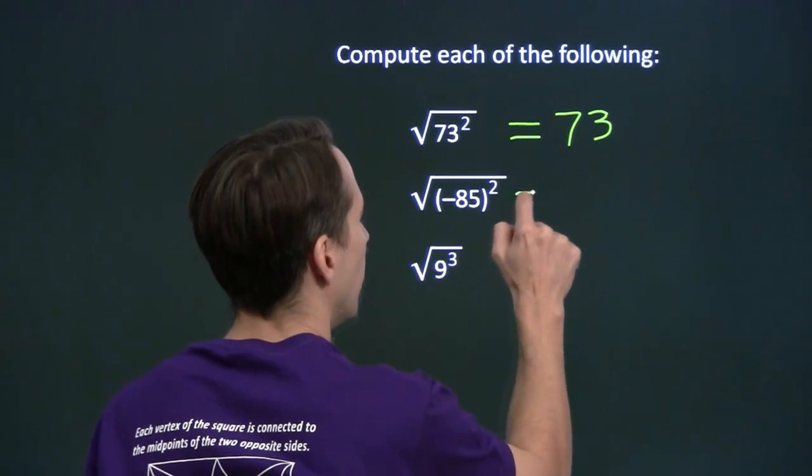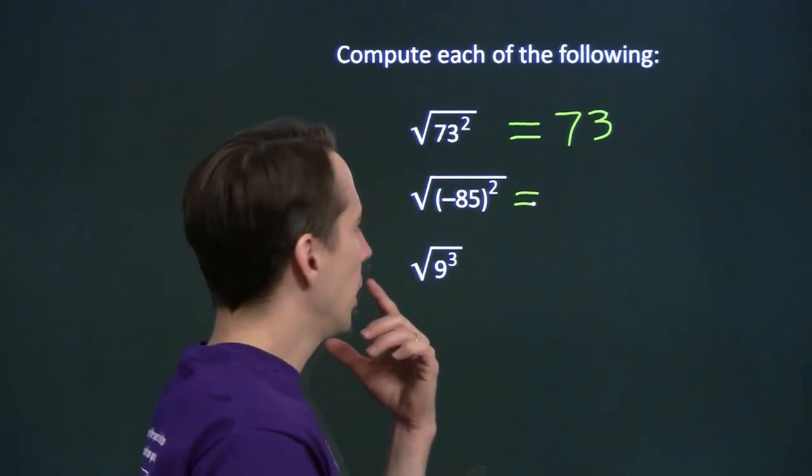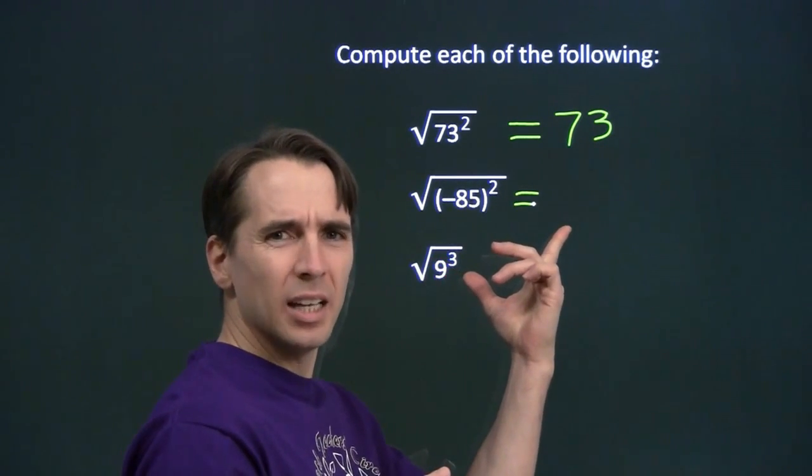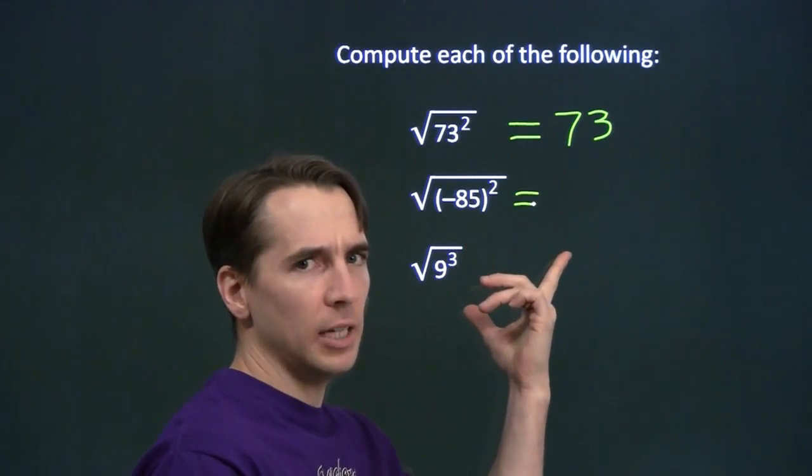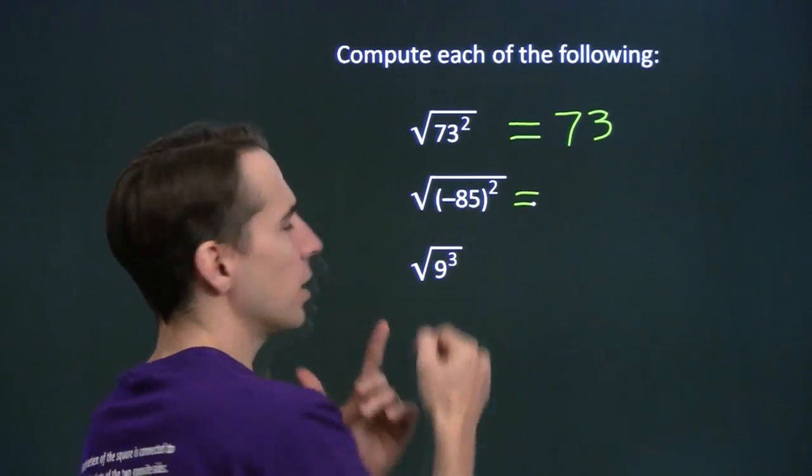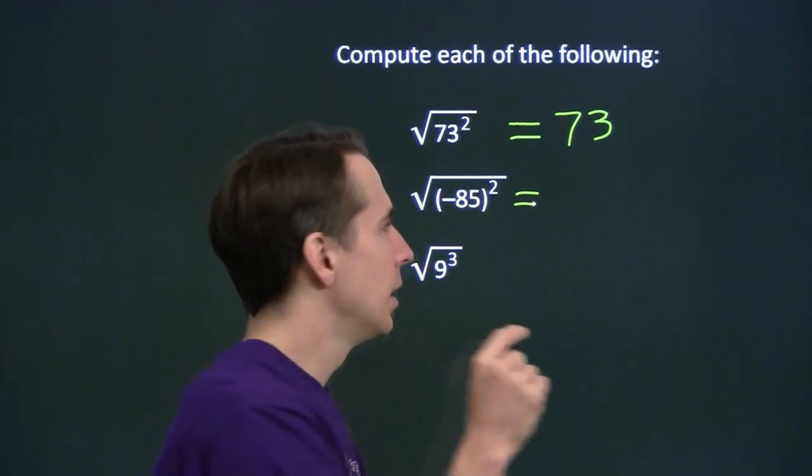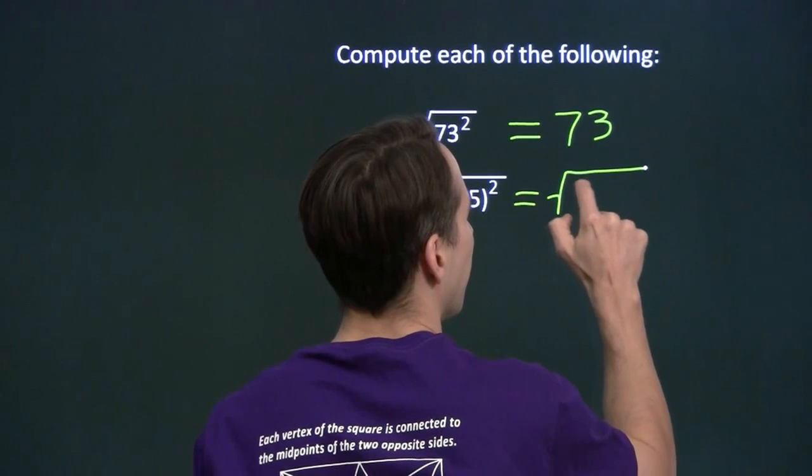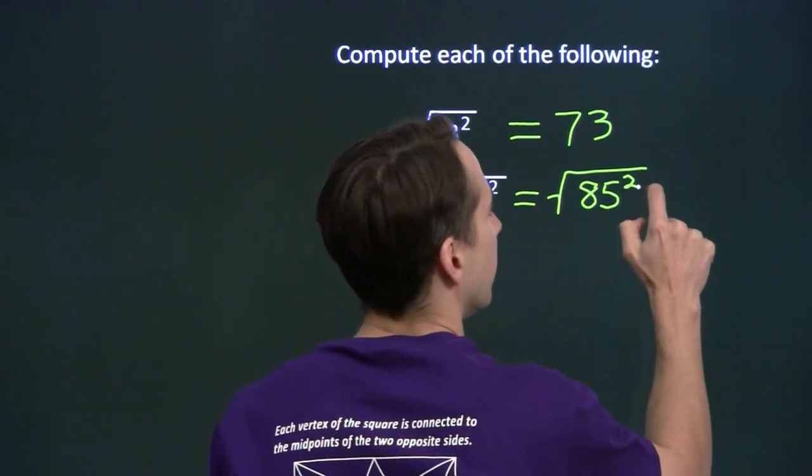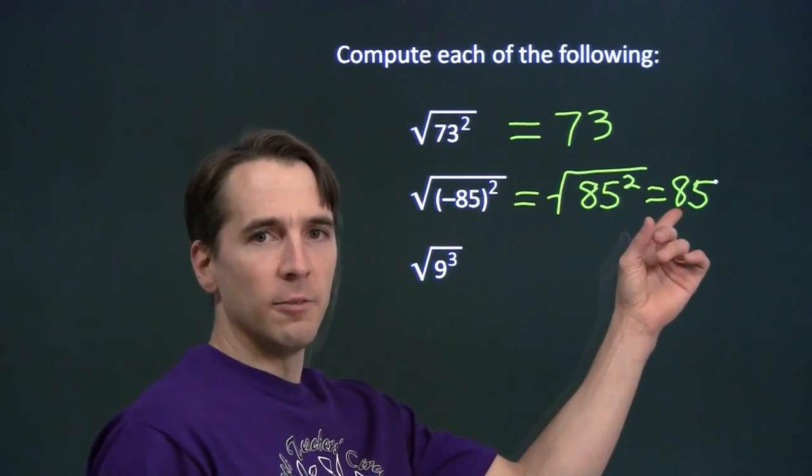For this one, well, you square negative 85 to get the square of negative 85, but square roots can't be negative. So the answer here can't be negative 85. We need to find a positive number that we square to get the same thing as negative 85 squared. But of course, a negative times a negative is a positive. So the square of negative 85 is the same thing as the square of 85. So our square root here is 85.